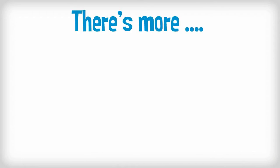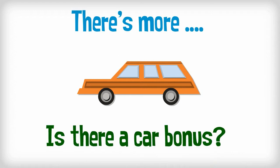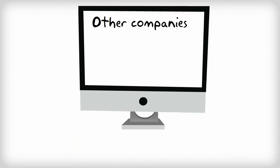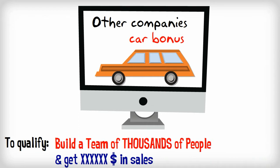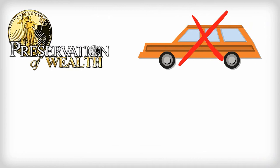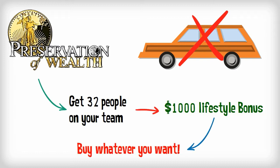As if you weren't excited enough already, now I'd like to tell you about the most achievable car bonus in the industry. Most companies tease you with the idea of a car bonus and then the qualifications are so difficult, most people will never even earn the car bonus. Preservation of Wealth is the exact opposite. With as few as 32 people on your team, you can qualify for the monthly $1,000 lifestyle bonus. You can use that to buy your dream car or you can spend it any way you'd like. It just does not get any better than that.